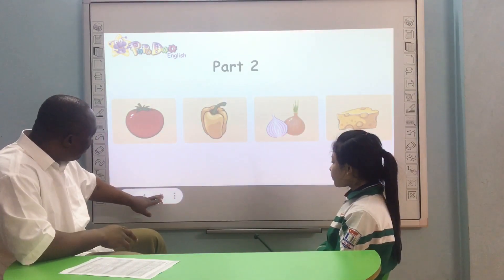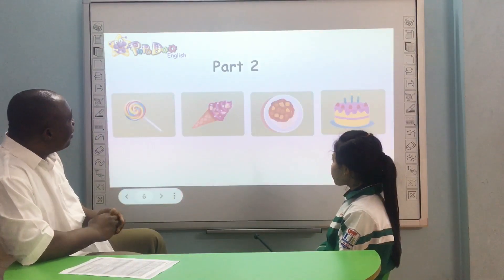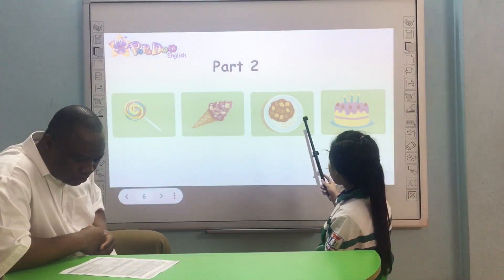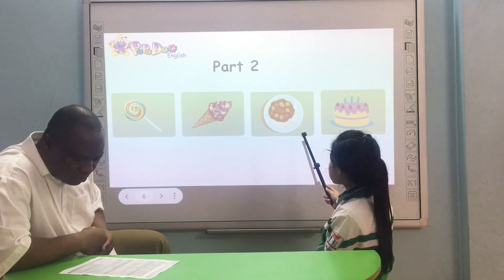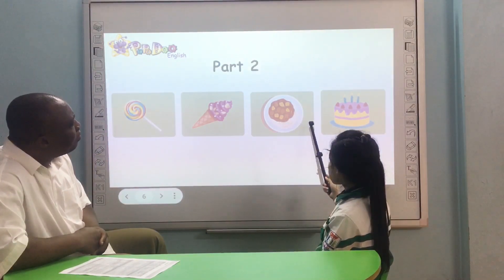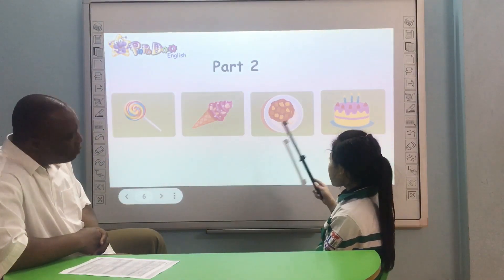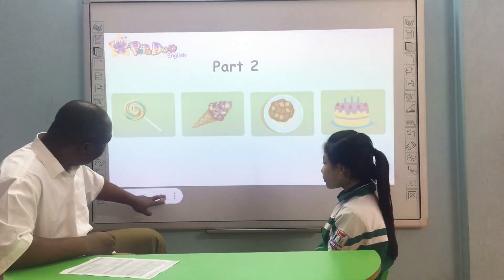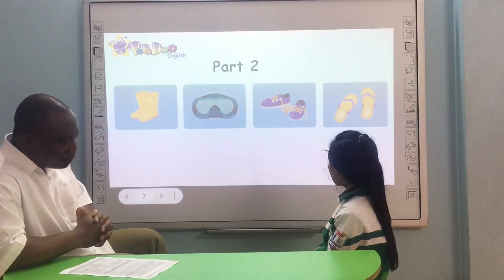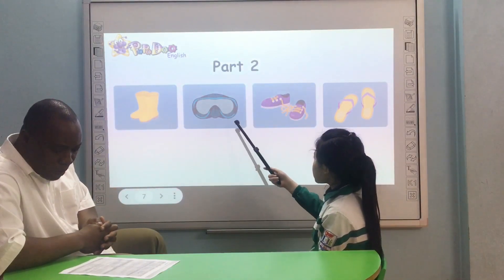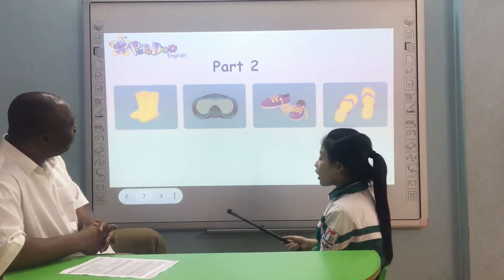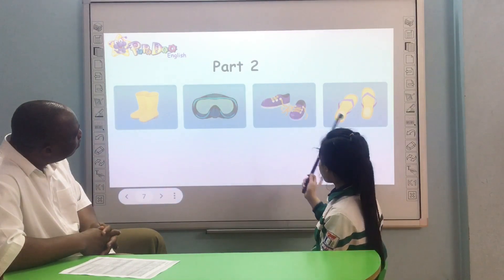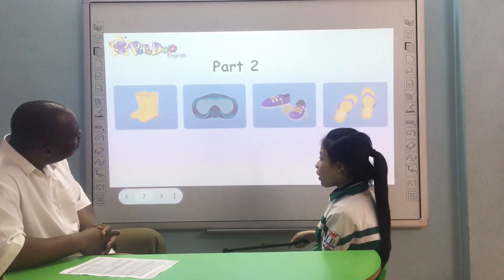Let's see the next pictures. Now find the difference here, please. Picture three is different because curry is spicy food, but the other three pictures are sweet food. How about this? Picture two is different because it's a very thin place, but the other three pictures are very nice.